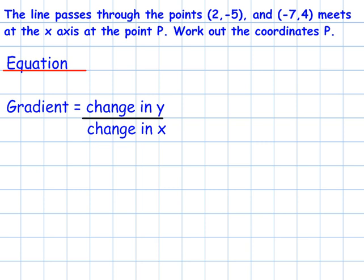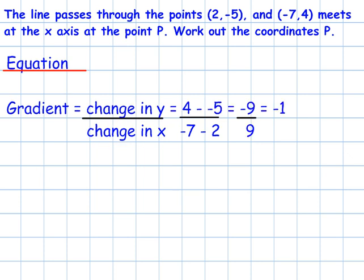So we do y2 minus y1 over x2 minus x1, which is 4 minus minus 5 over minus 7 minus 2. 4 minus minus 5 is 9, and minus 7 minus 2 is minus 9. So we'd have minus 9 over 9, which gives us a gradient of minus 1.